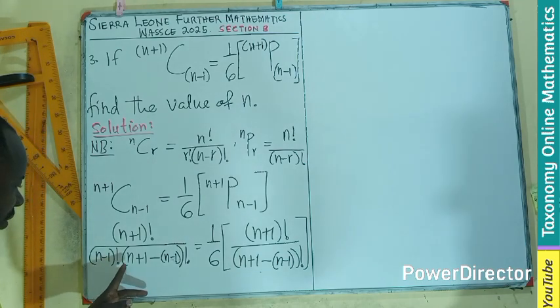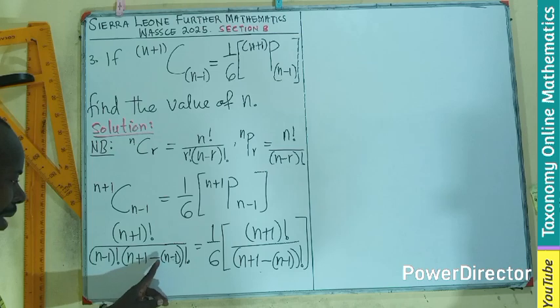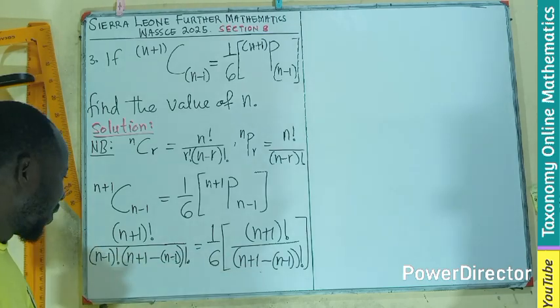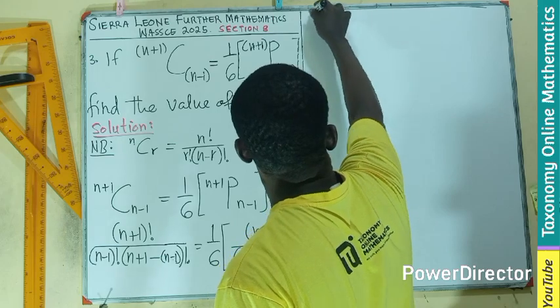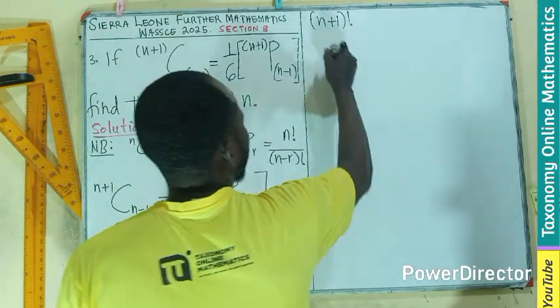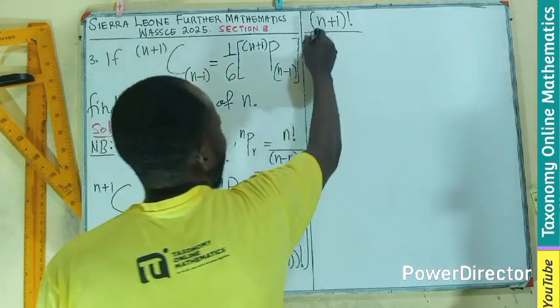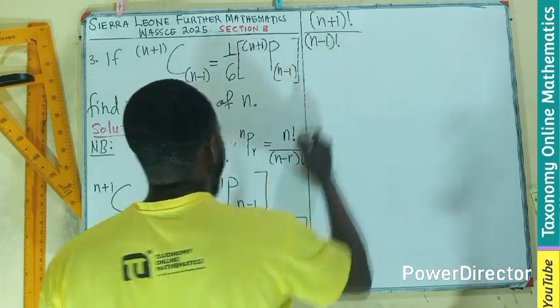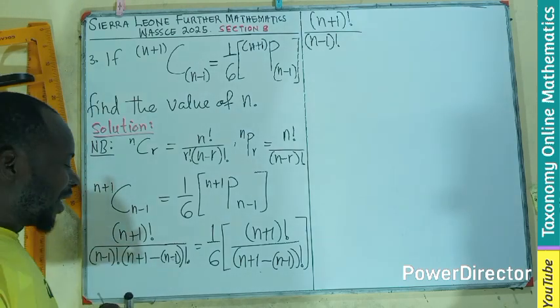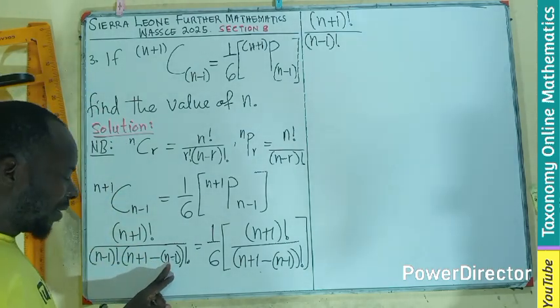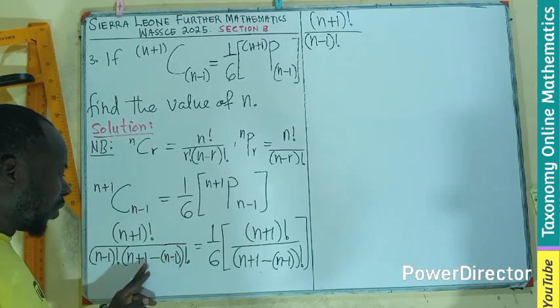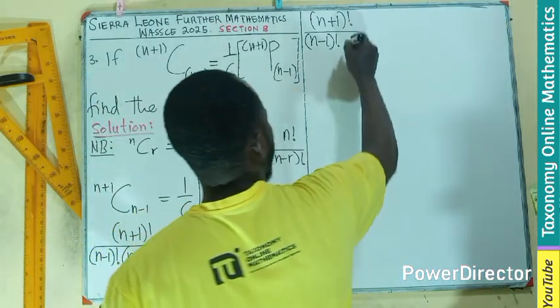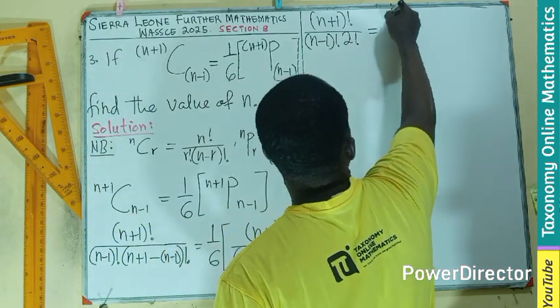So first thing first, you check from here. If I open this bracket, it becomes minus n, then this becomes plus. Same, if I open this minus n plus. So let me just go ahead and keep the n+1 factorial as the first stage, then divided by my n-1 factorial. This is going to be minus n plus 1. So minus n and minus n will go. I will be left with only 1 plus 1, that will be 2. So that will give me 2 factorial equals to 1/6.